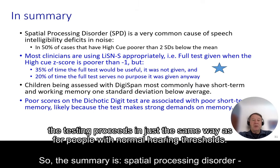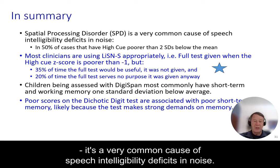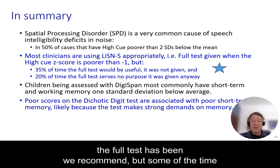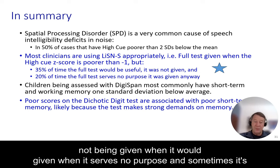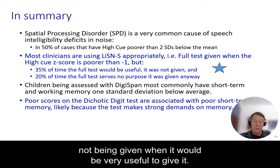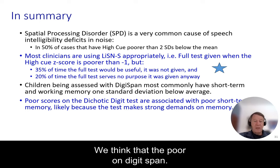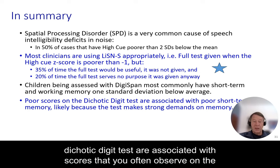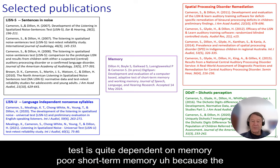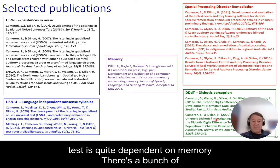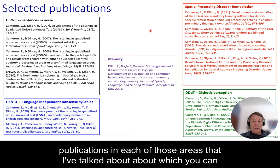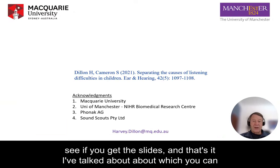In summary: spatial processing disorder is a very common cause of speech intelligibility deficits in noise. Most clinicians are using the test as we recommend, but sometimes the full test is being given when it serves no purpose, and sometimes it's not being given when it would be very useful. Children commonly have a deficit on DigiSpan testing, and we think the poor scores often observed on the dichotic digit tests are associated with poor short-term memory, because the test is quite dependent on memory. There are publications in each of these areas for those who get the slides.